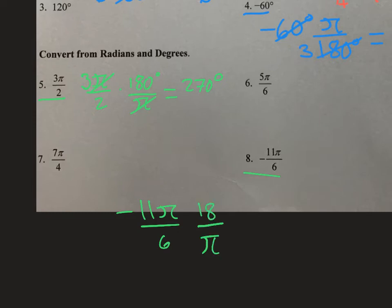The π's cancel out. 6 goes into 180 thirty times. So we are left with negative 11 times 30 degrees. Negative 11 times 30 degrees is equal to negative 330 degrees.